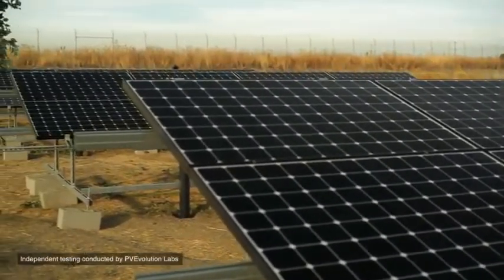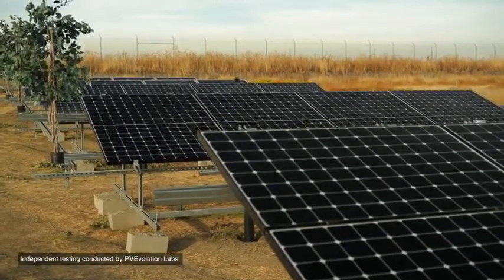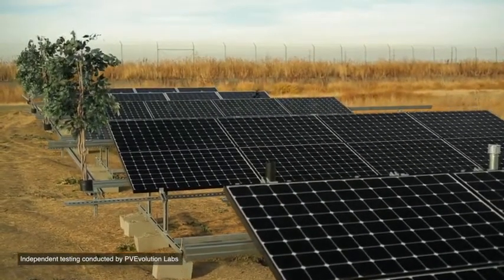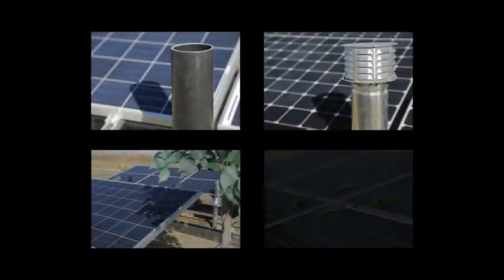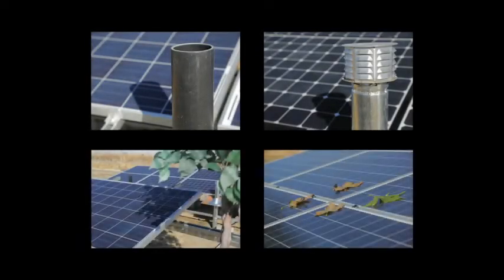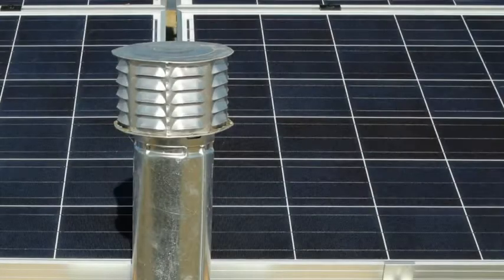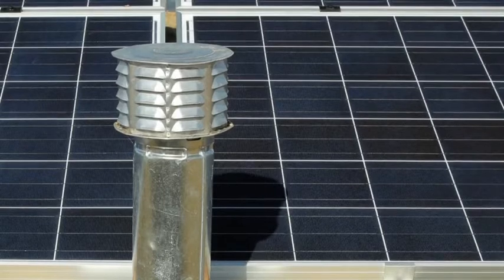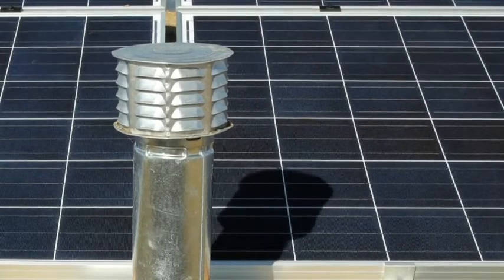An independent test lab compared the energy output of SunPower panels and conventional panels under real-world shading conditions. Four identical systems were set up, each with two vent pipes, a tree, and four leaves casting shadows on the panels. As the sun moves through the sky, shadows sweep across the solar panels, and the energy generated by each system is measured throughout the day.